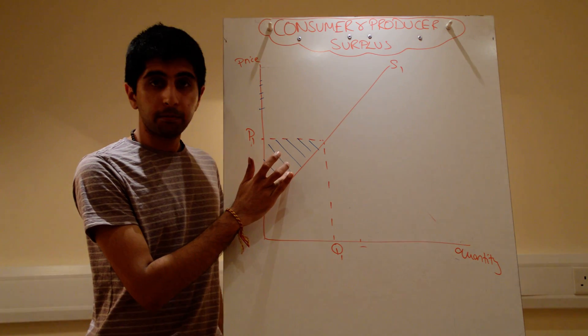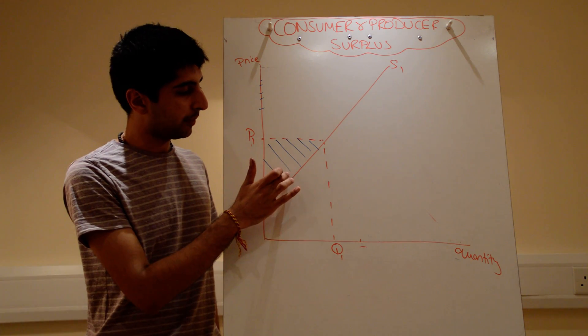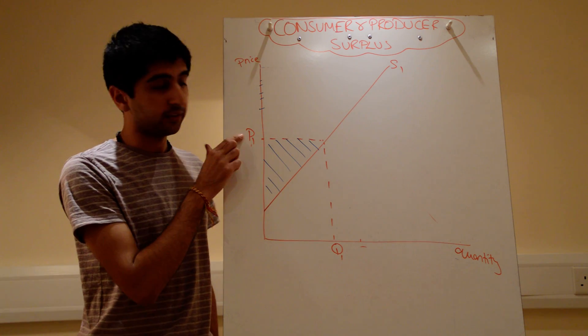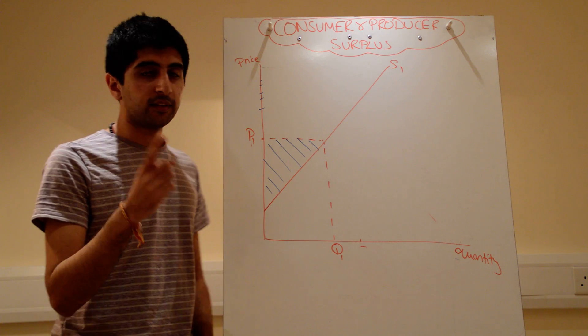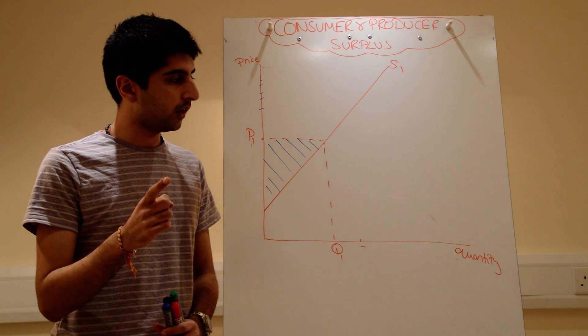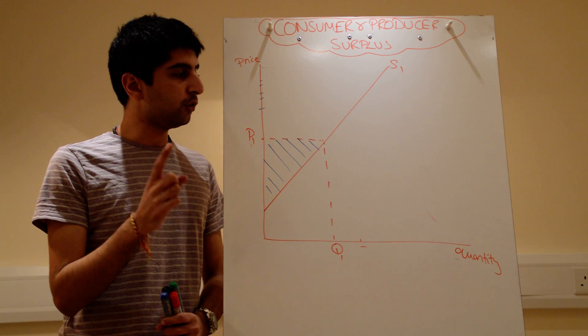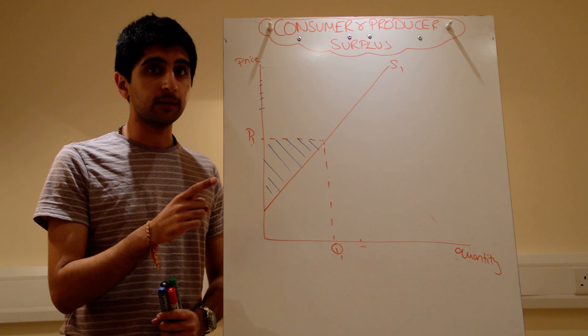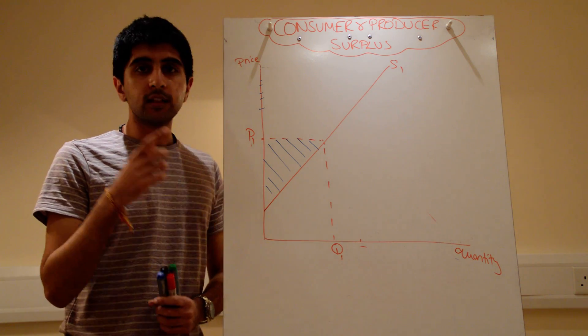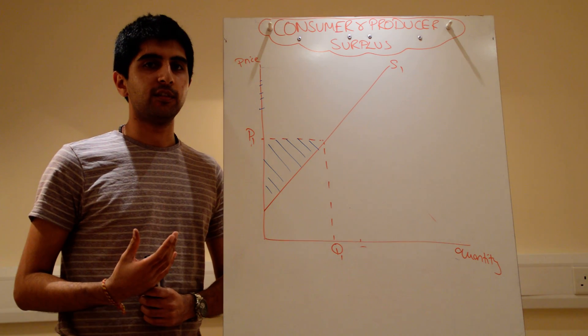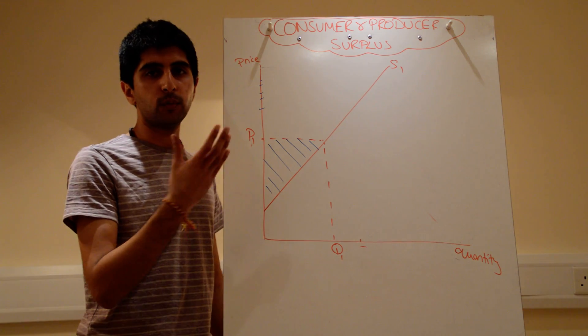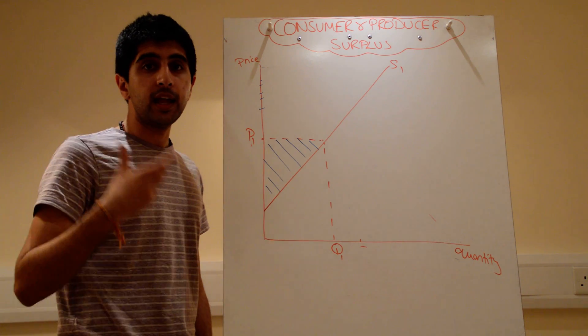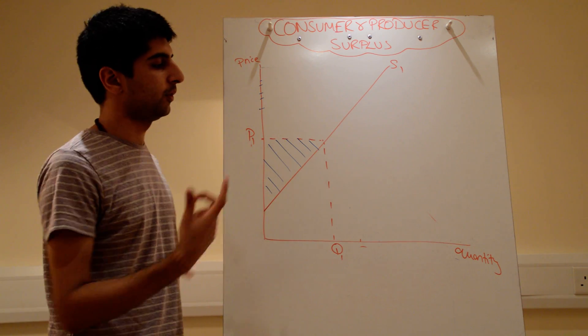Producer would have been happy, some producer would have been happy to supply this level of quantity at this price. Well, they're now selling at that price, they're benefiting. So producer's surplus is defined as the difference between the price producers are willing and able to supply a good or service at and the price they actually receive. So the difference between the two is the welfare gain, is the producer's surplus.